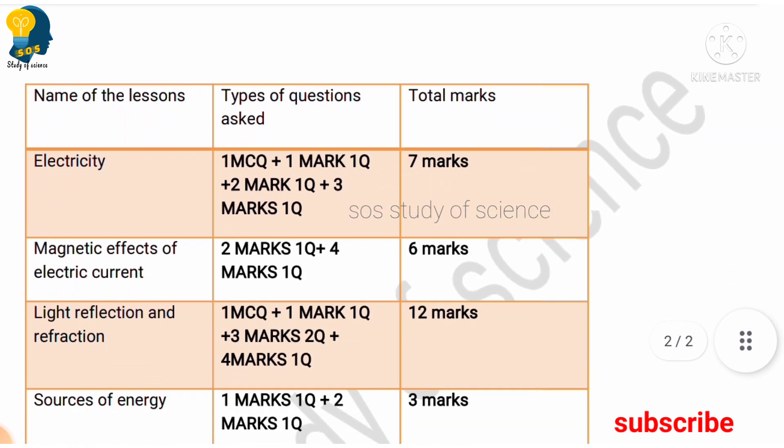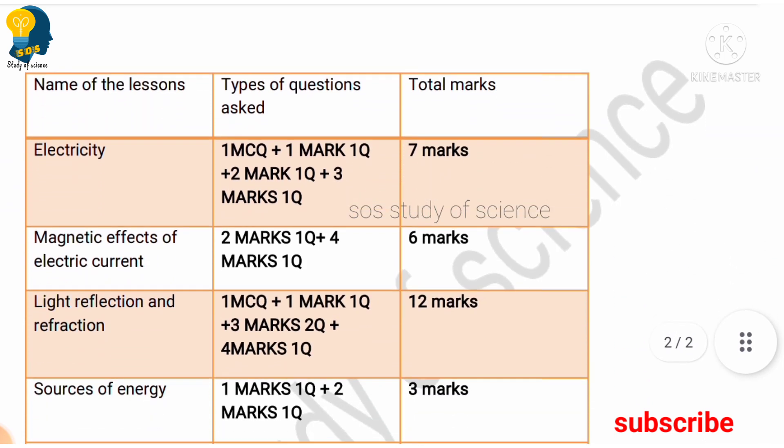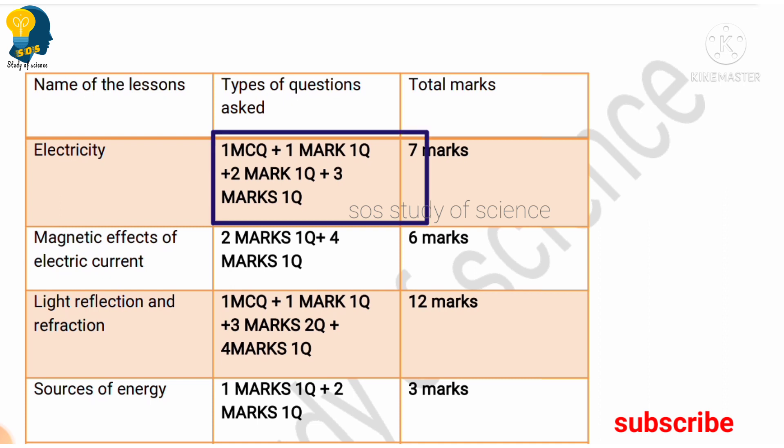For the Physics part, the Electricity lesson has seven marks allotted, out of which there is one MCQ, one one-mark question, one two-mark question, and one three-mark question — so totally seven marks for Electricity.